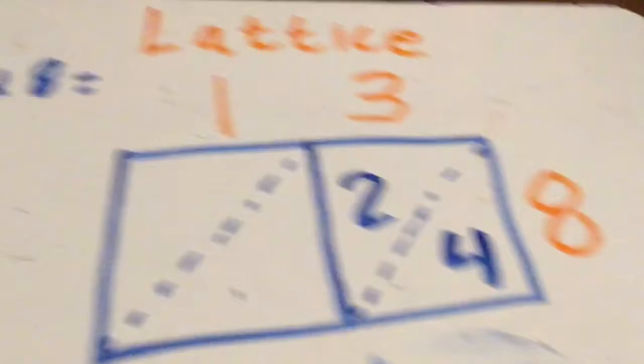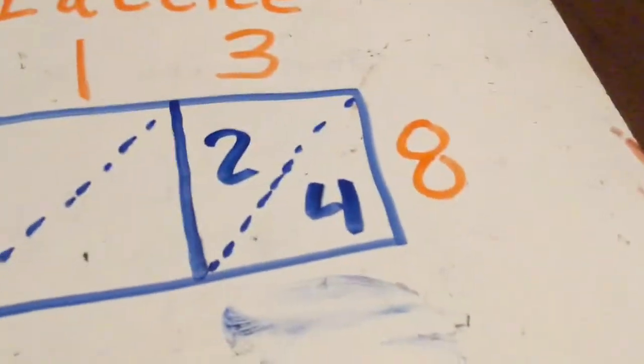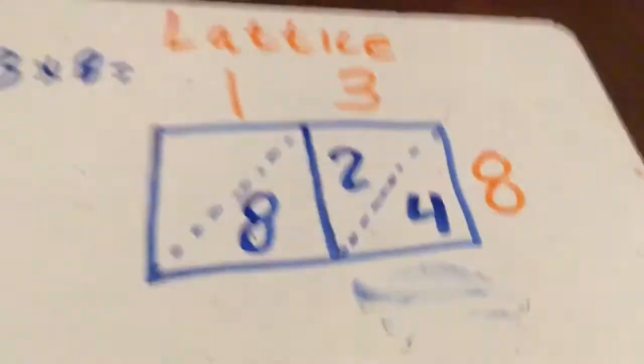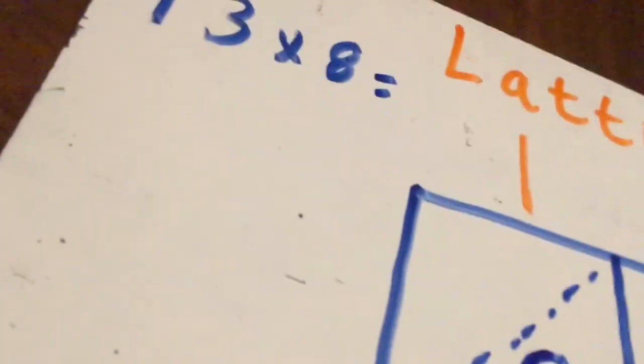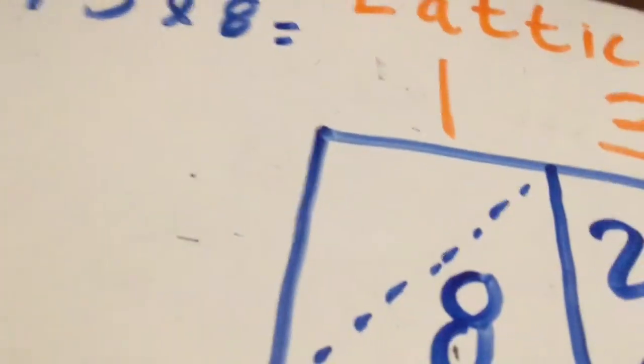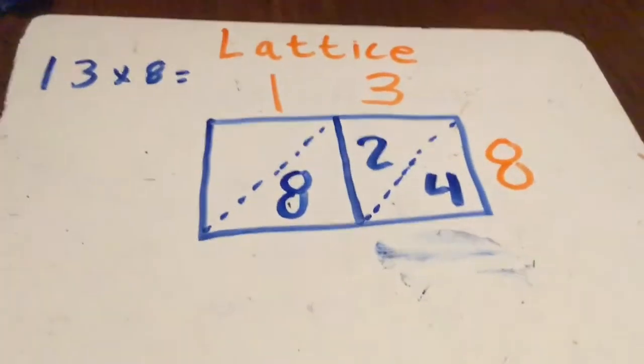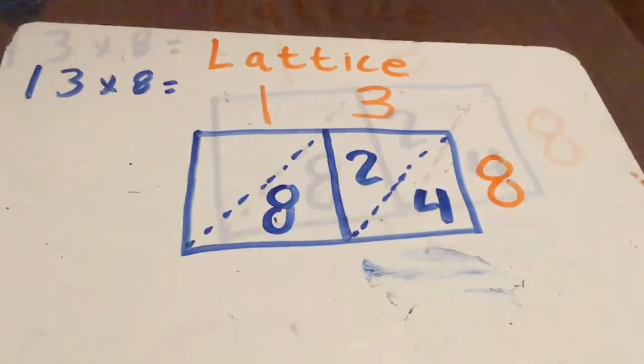Now I do 8 times 1. Okay what's 8 times 1? Well that's 8. There's no number here because there's no number in the tens place. If it was 18 I'd put a 1 there. If it was 48 I'd put a 4 there. But it's not. It's 8. Okay so far this is how it looks.